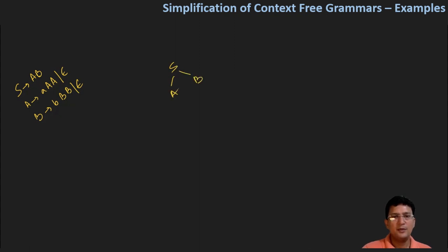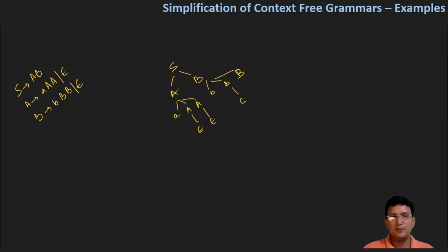S produces A, B. A produces small a, capital A, and capital A. B produces small b, capital B, and capital B. In place of capital A, I can put epsilon, and in place of the other capital A, I can put epsilon. In the place of capital B, I can put epsilon, and in the place of the other capital B, I can put epsilon.